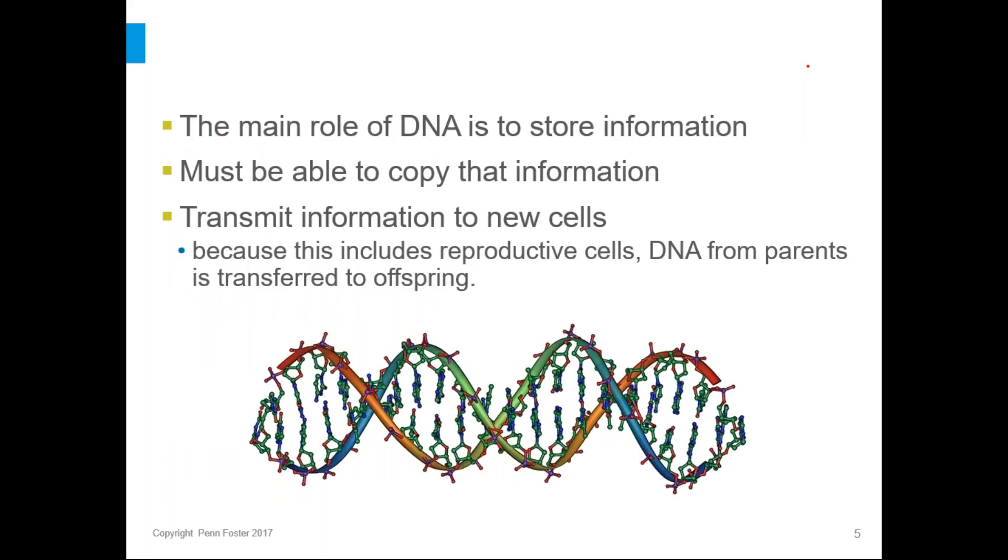So why is DNA so important? Its main role is to store information. Your DNA stores the information for everything that your body does and everything that your body is. All of that information gets passed down from cell to cell through DNA. So along with storing information, which is the number one job of DNA, it also has to be able to copy that information and be sure that every new cell has a copy. This is important because it tells the cell what to do, how to be a cell. And because this includes the reproductive cells, eggs and sperm all get a copy of DNA, the DNA from parents is transferred to the offspring.